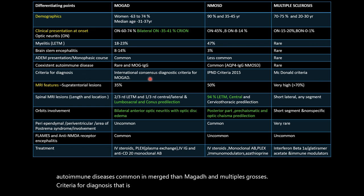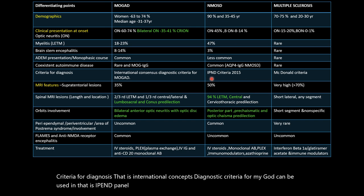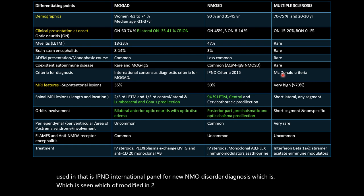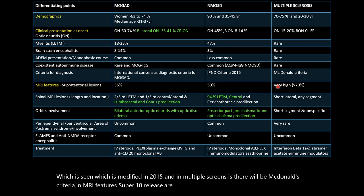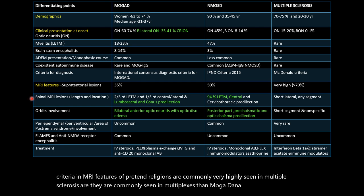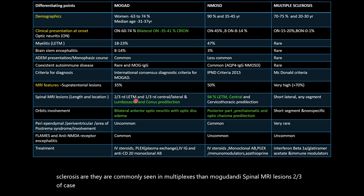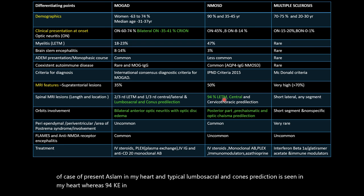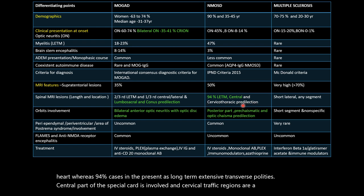Diagnostic criteria: international consensus diagnostic criteria for MOGARD; IPND (International Panel for NMO Disorders) criteria modified in 2015 for NMOSD; and McDonald's criteria for MS. On MRI, supratentorial lesions are most common in MS. For spinal MRI: two-thirds of MOGARD cases present as LETM with lumbosacral and conus predilection; 94% of NMOSD cases present as LETM with central cord involvement and cervicothoracic predilection; MS shows short-segment involvement at any level.